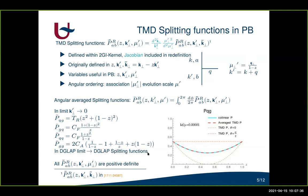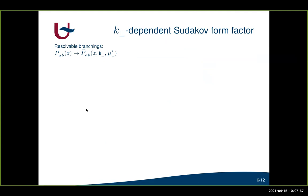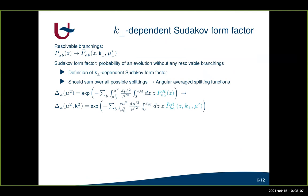Another important property of these TMD splitting functions is that they are all positive definite, which is very useful in Monte Carlo implementations. Of course we want to use these TMD splitting functions for the resolvable branchings, but we also want to treat the non-resolvable branchings by making a k_T-dependent Sudakov form factor. The Sudakov form factor represents the probability of evolution without any resolvable branchings, so when the resolvable splitting probabilities depend on transverse momentum, the Sudakov form factor should as well. The Sudakov form factor sums over all possible splittings, and therefore we use angularly averaged splitting functions in our TMD Sudakov form factor.